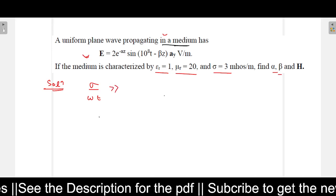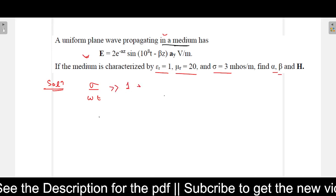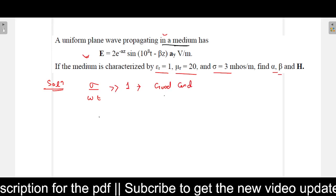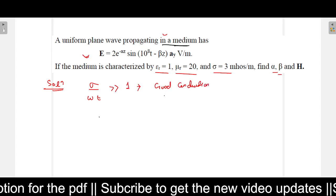And if this is very, very high compared to 1, then the medium is a good conductor or medium property can be taken as a good conductor, and we can use the formula for a good conductor.